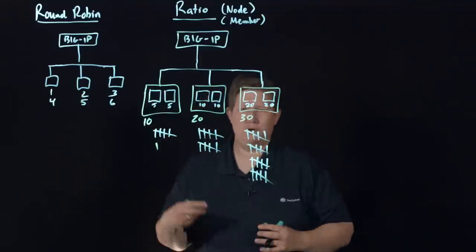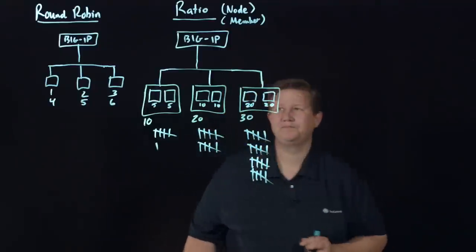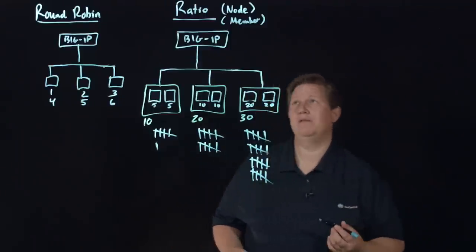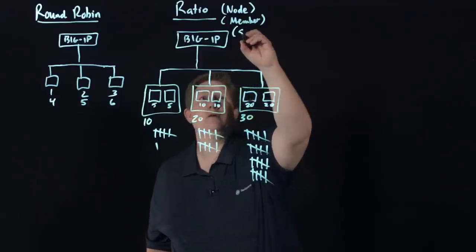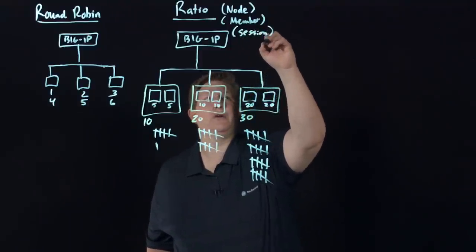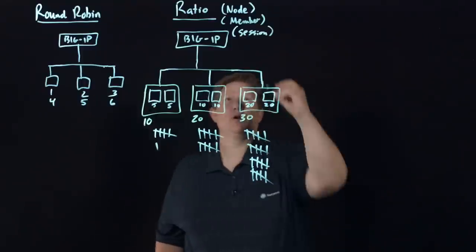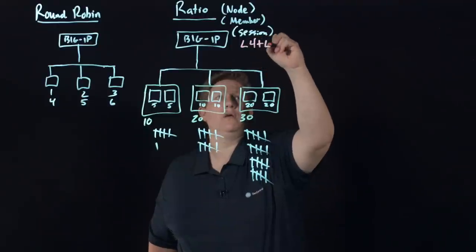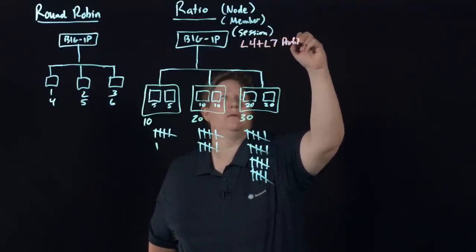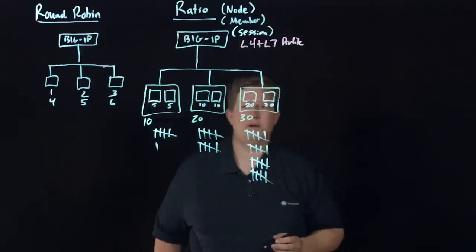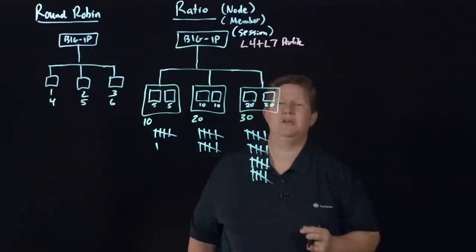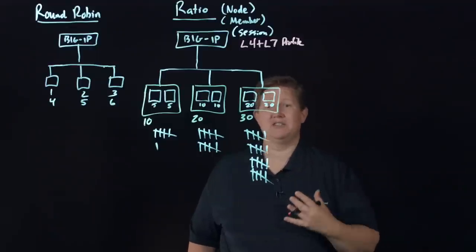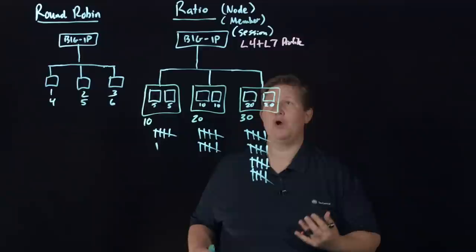Then we can look at also a third type of ratio, and that is ratio session. This one requires an L4 and an L7 profile. Also with ratio session, it is looking at pending sessions which are also considered active. A session is considered any transaction between the same client and server over an active connection.